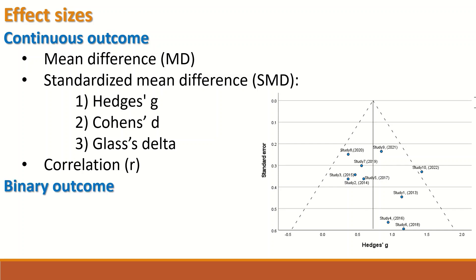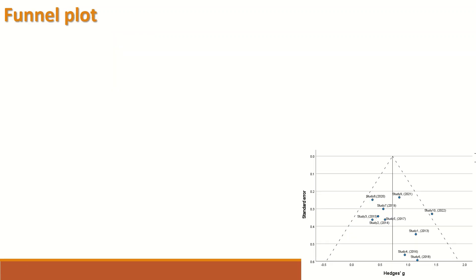If the outcome from the publications is binary, then the odds ratio can be included on the x-axis, or the risk ratio, or the hazard ratio.